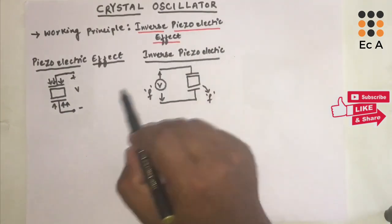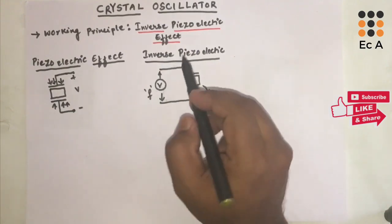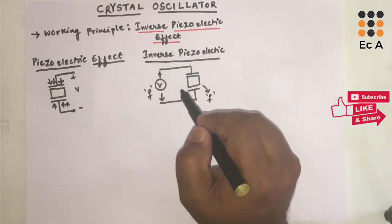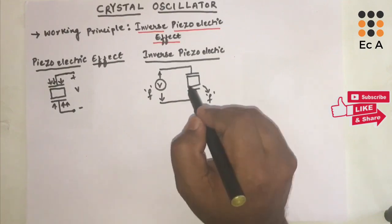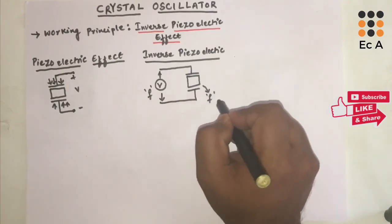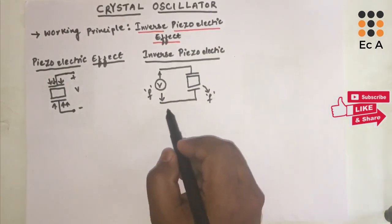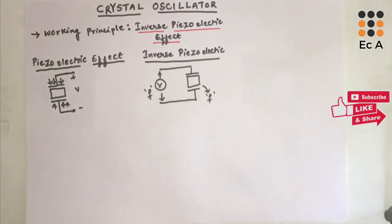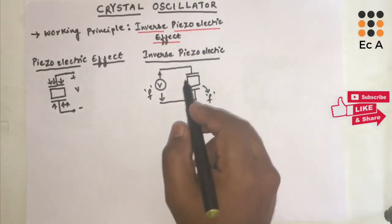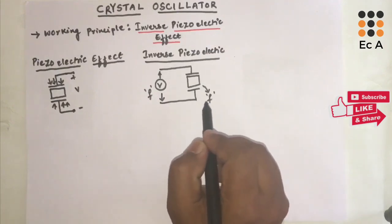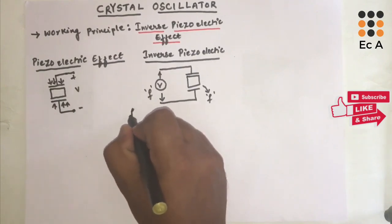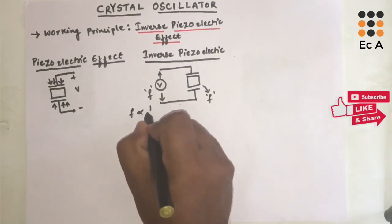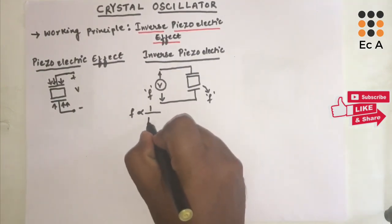This piezoelectric material will vibrate with the same frequency, and this effect is known as inverse piezoelectric effect. Whenever a voltage of some frequency is applied at the terminals of a piezoelectric material — for example, a crystal — this material will vibrate at the same frequency f. This natural resonating frequency of the crystal depends upon the thickness of the crystal.